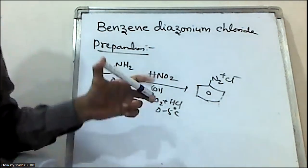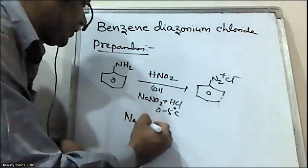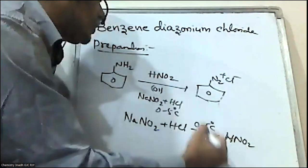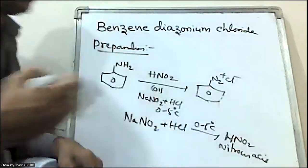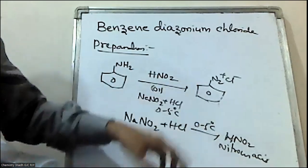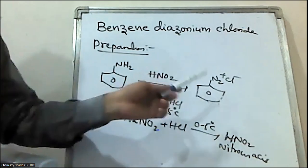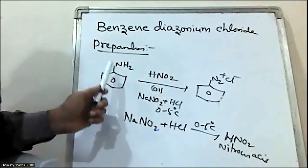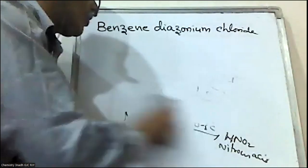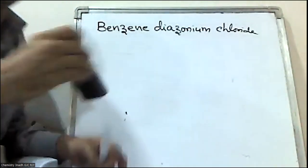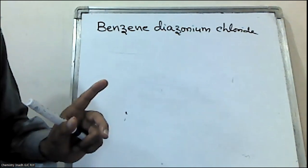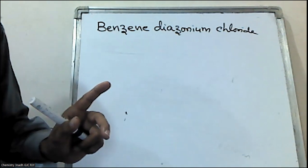Aniline on reaction with sodium nitrite plus HCl at 0 to 5 degrees centigrade — in situ it produces nitrous acid — and benzene diazonium chloride is formed. We know that this is one of the important intermediates to prepare a variety of aromatic organic compounds.